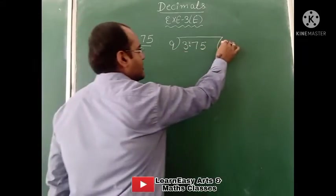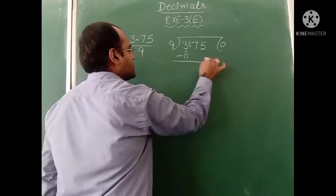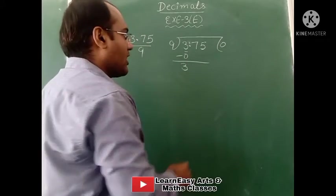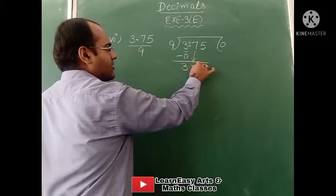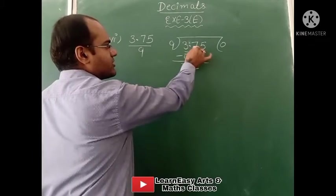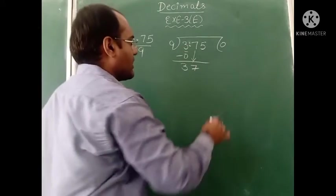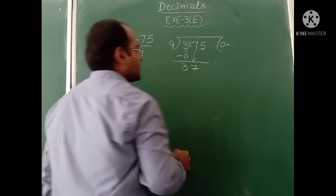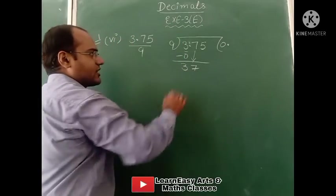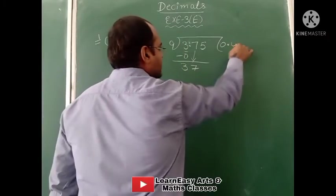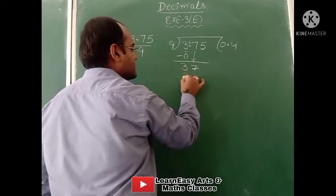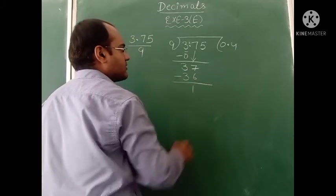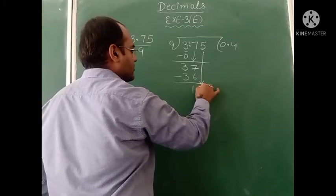9 times 0 is 0. On subtracting, remainder we get is 3. When we bring this 7 down — before this 7 decimal is there — so in the answer also we have to put decimal. Now this is 37. 9 times 4 is 36. Remainder is 1. We bring down 5, so this becomes 15.